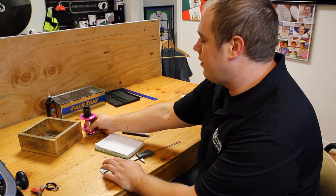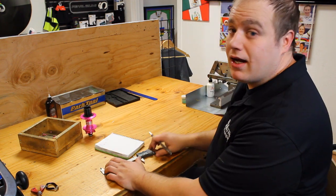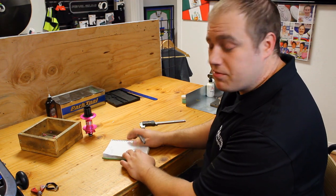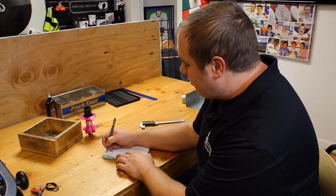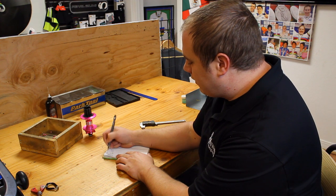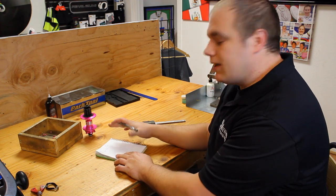The other thing you'll need to know is the spoke count of your rims and hubs. Hopefully you know that by the time you've already ordered your parts. So these are 32 hole wheels. We will plug this into the spoke calculator.